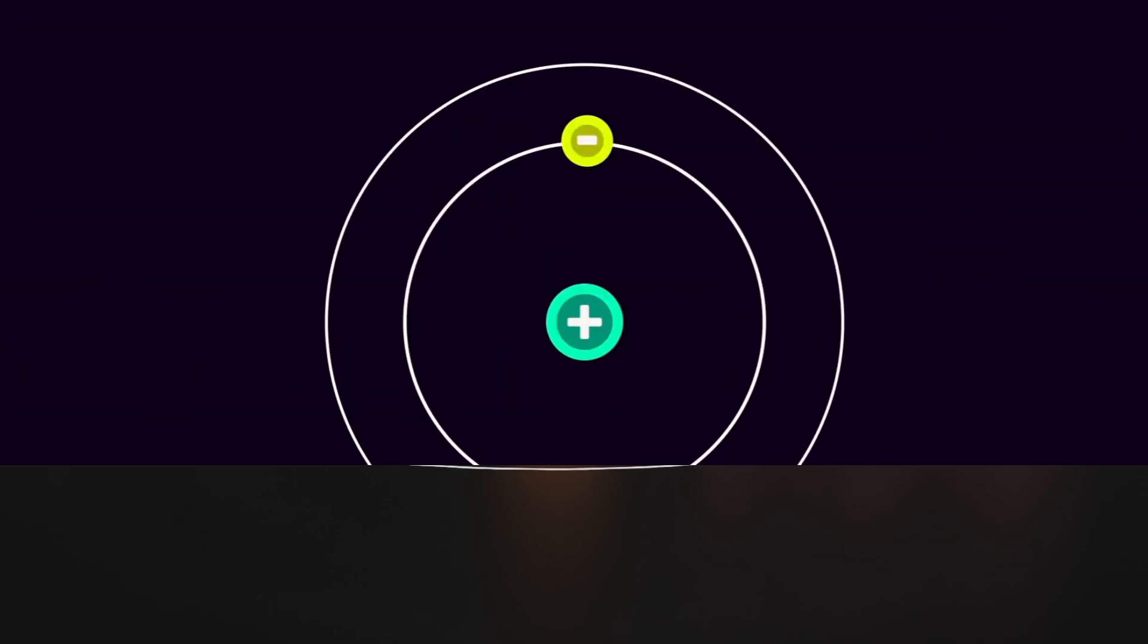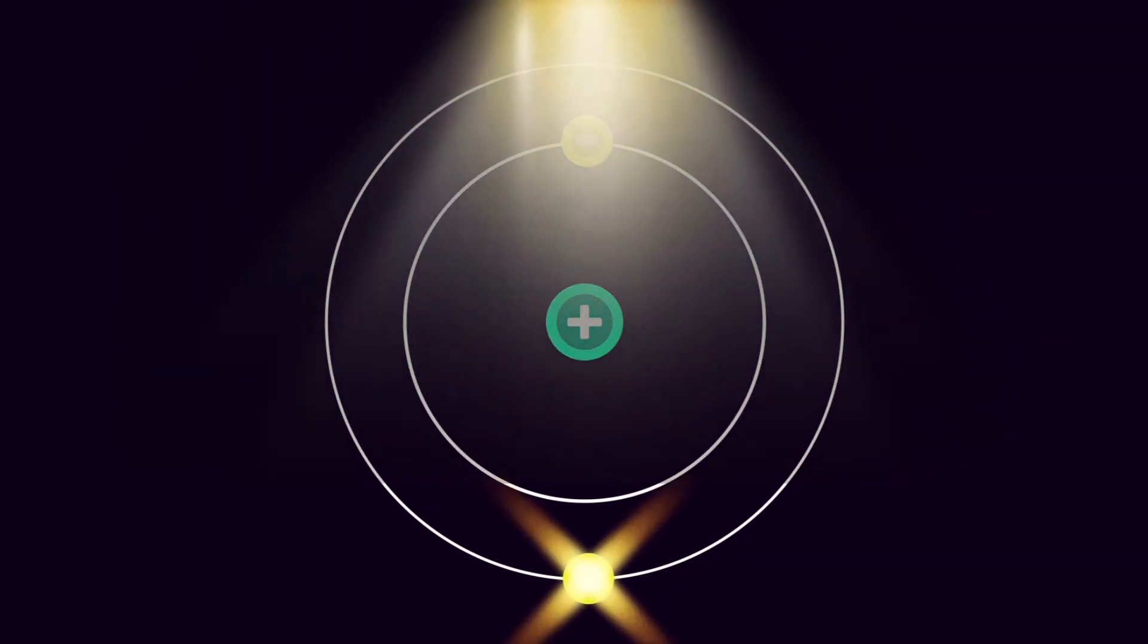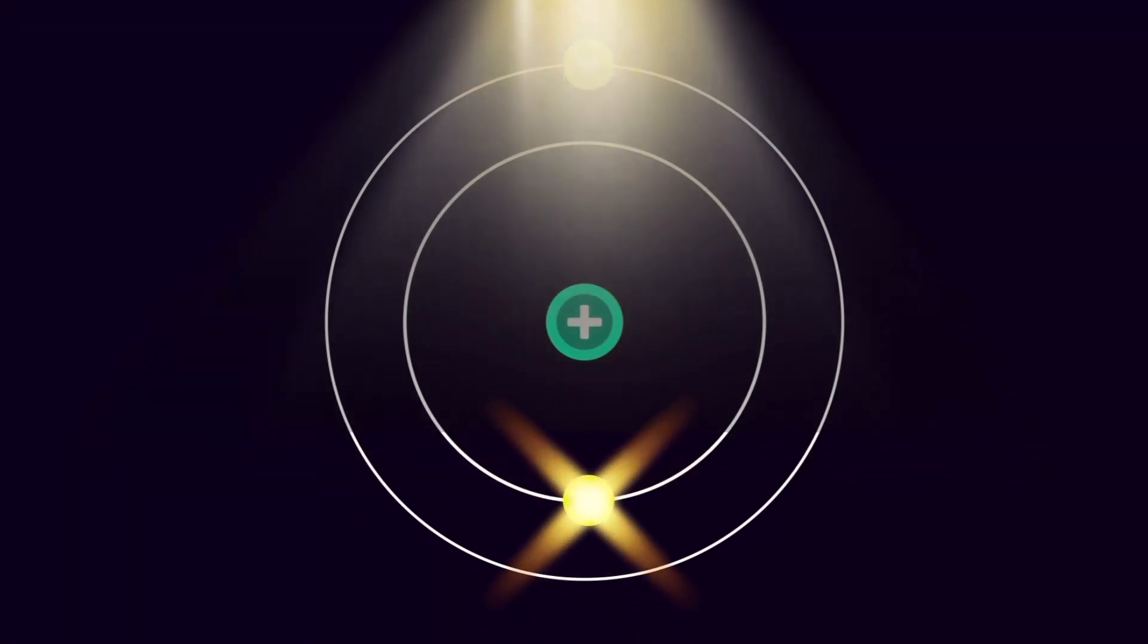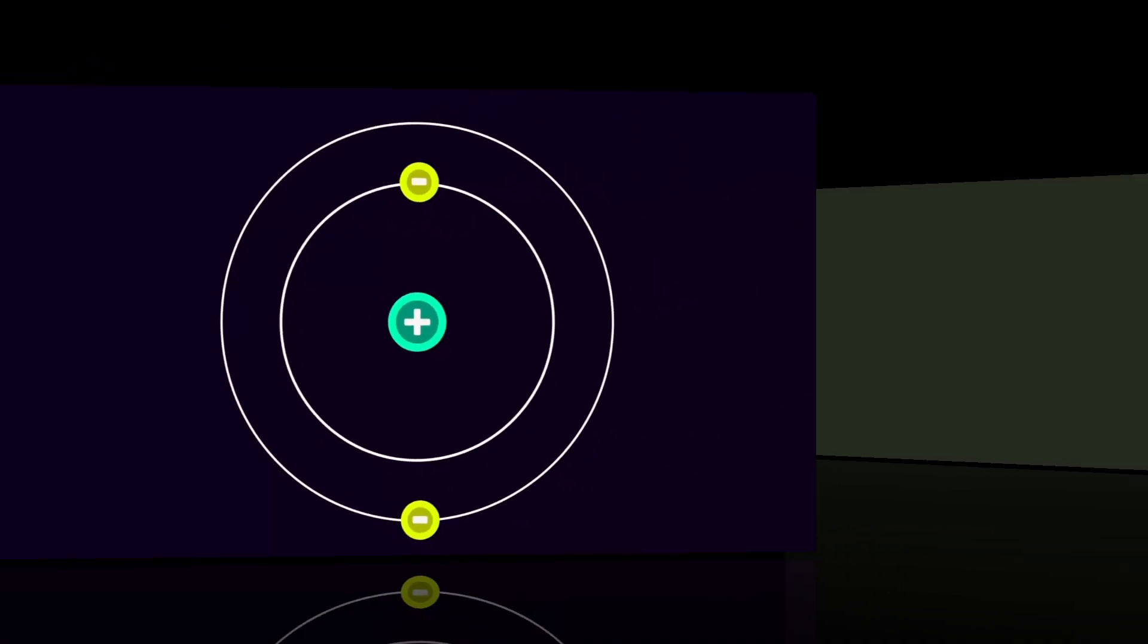Now the really cool part: electrons can jump between these shells, but they can only do so by absorbing or emitting a specific amount of energy in the form of light. This was huge. It helped explain why atoms didn't just collapse into a giant mass of particles.